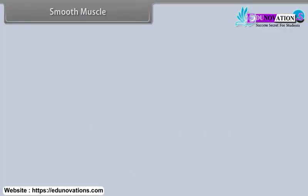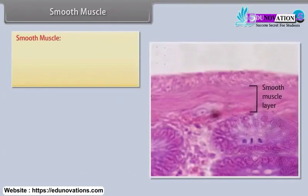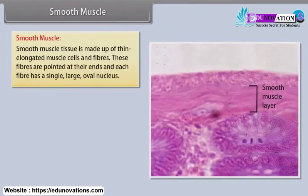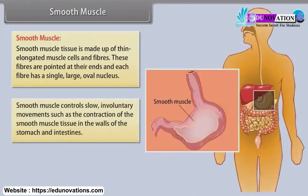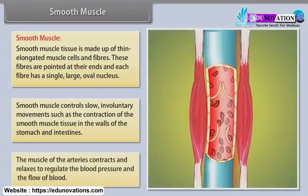Smooth muscle. Smooth muscle tissue is made up of thin, elongated muscle cells and fibers. These fibers are pointed at their ends and each fiber has a single, large, oval nucleus. Smooth muscle controls slow, involuntary movements, such as the contraction of smooth muscle tissue in the walls of the stomach and intestines. The muscles of the arteries contract and relax to regulate blood pressure and the flow of blood.